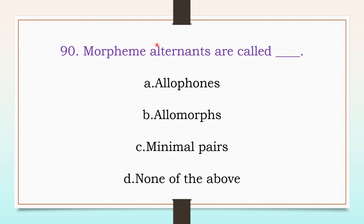Morpheme alternants are called: allophones, allomorphs, minimal pairs, or none of the above. The answer is B, allomorphs.